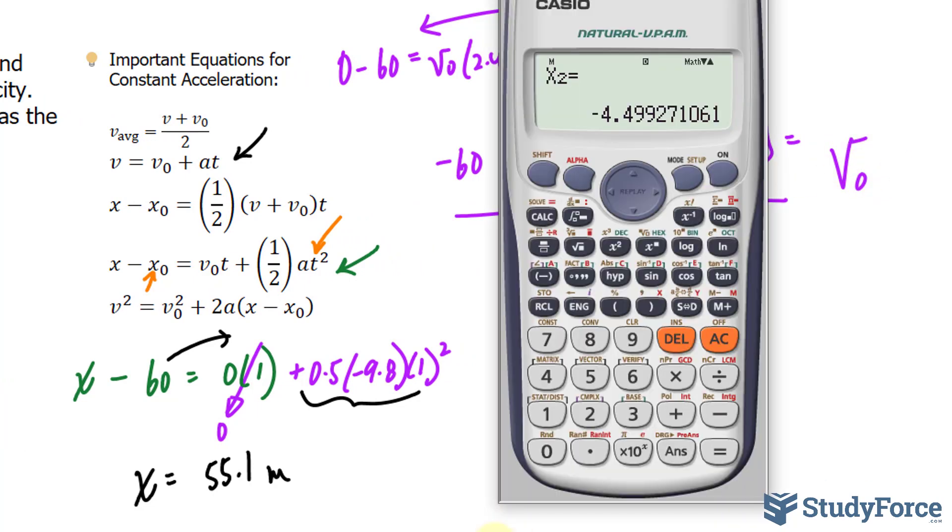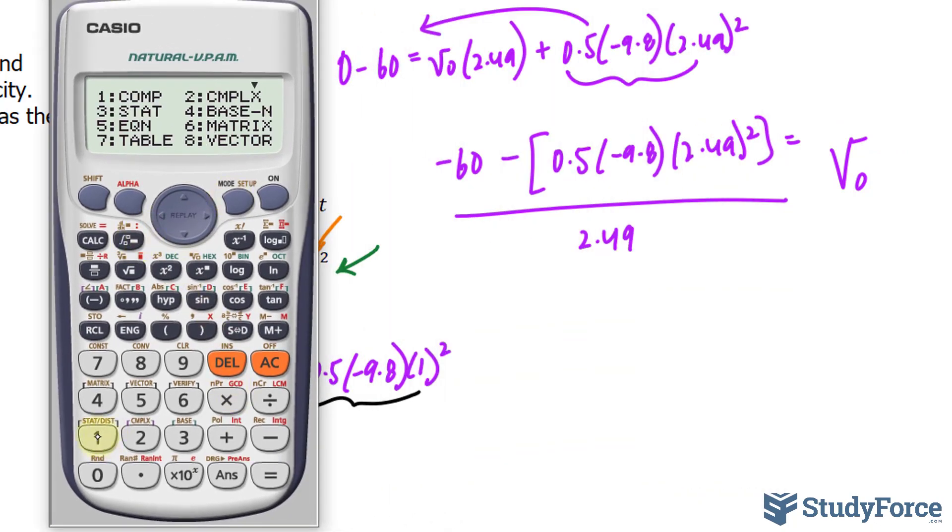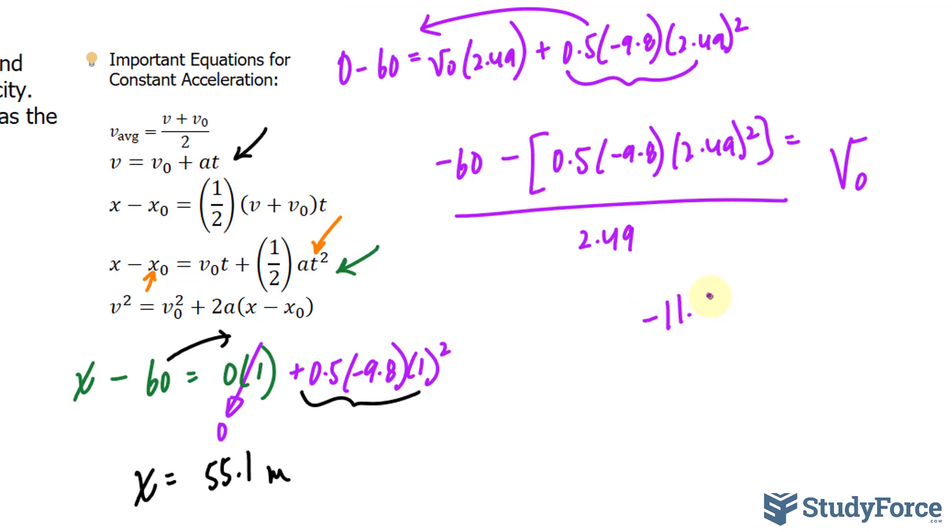So let's use our calculator. We have negative 60 minus bracket 0.5 bracket negative 9.8 bracket 2.49 raised to the power of 2, that's the top part of the fraction. Divide now by 2.49. And we get initial velocity of negative 11.89 or simply 11.9 meters per second down.